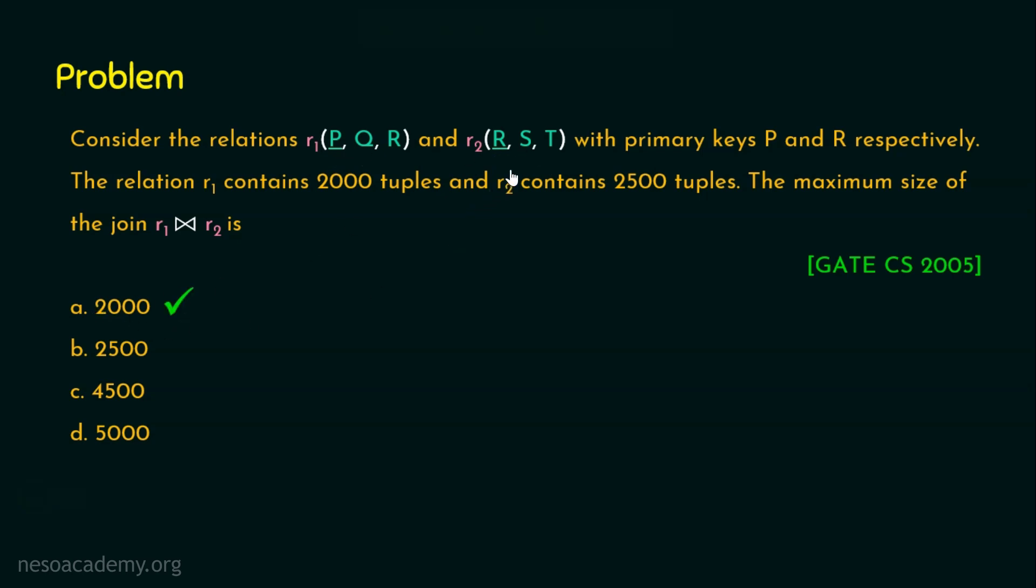In other words, the common attribute R is the primary key in relation R2 and this R should be having 100% unique and no null values for all 2500 tuples. Hence, when we join this, the maximum possibility is going to be only 2000 because the minimum of these two will be the answer. Remember, there is no foreign key constraint or any other constraints provided and hence, the minimum is going to be the answer for this question. So the answer is obviously option A, 2000.